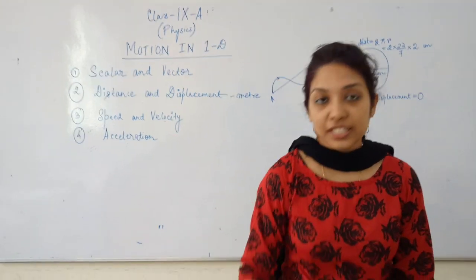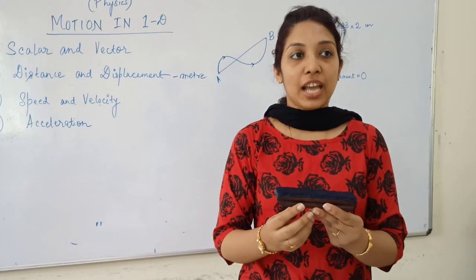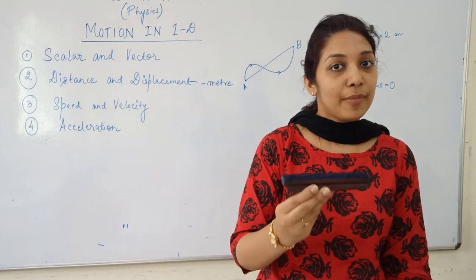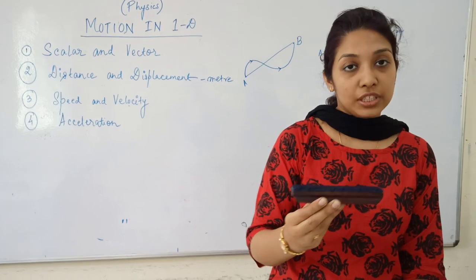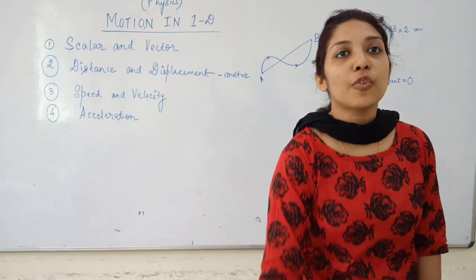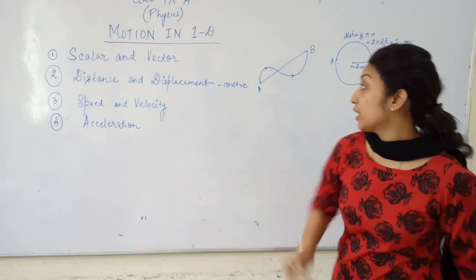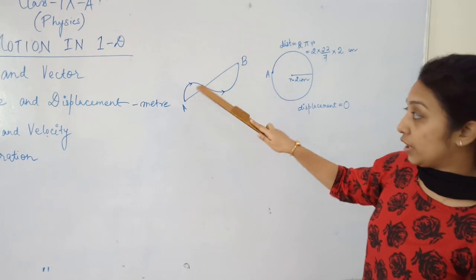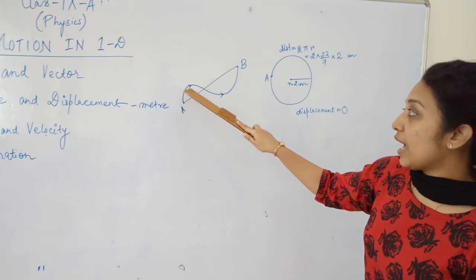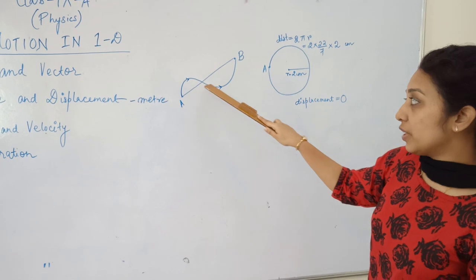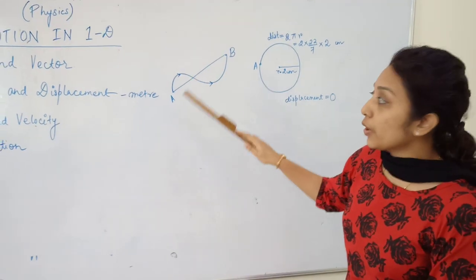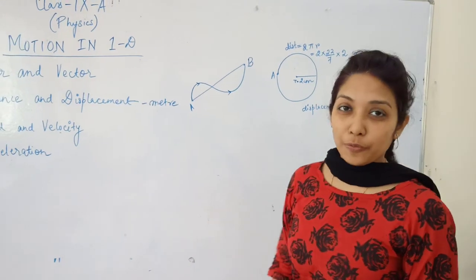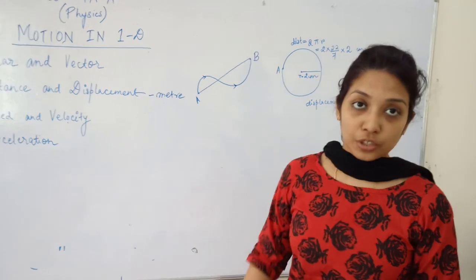For example, take this duster — it has some length, breadth and height but it is not moving anywhere, so it has no direction but it has some magnitude. This is a scalar quantity. Similarly, a body moving from point A to point B along a curved path has a direction assigned to it — the arrow goes up, then down, reaching point B — so it has both magnitude and direction. This is a vector quantity.